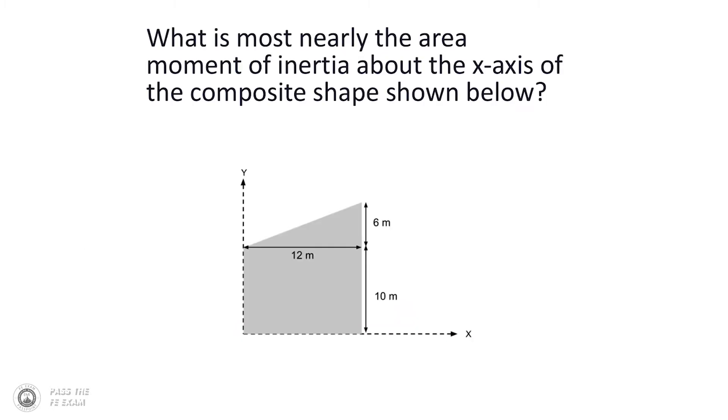Now the trick with this question is that in order to determine the moment of inertia about the x-axis of this composite shape we must break up the shape into common smaller shapes. In this case the composite shape shown in the problem can be broken down into a triangle and a rectangle. You're going to refer to the area and centroid table in the statics chapter of the FE reference handbook and there you're going to be able to find the equations for these common shapes which we're going to go through now.